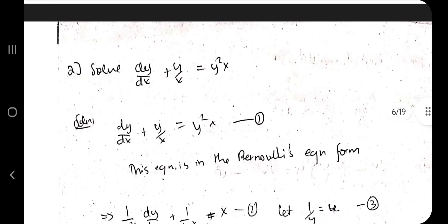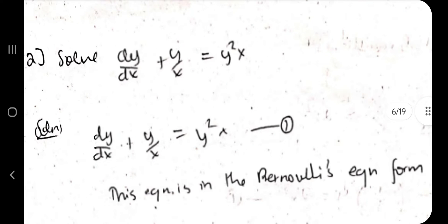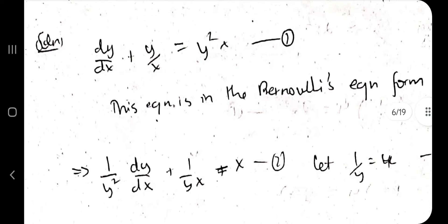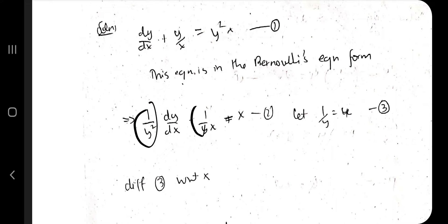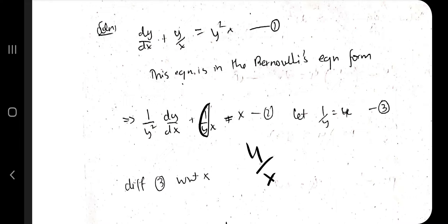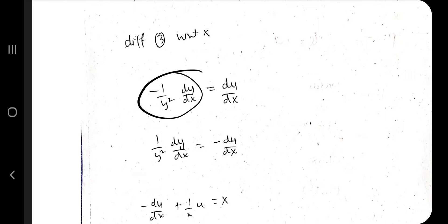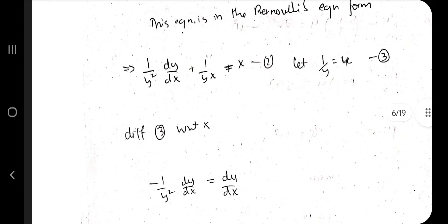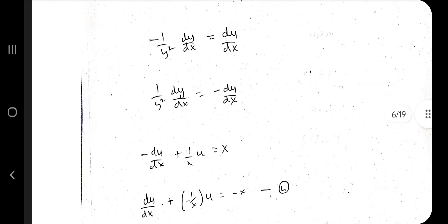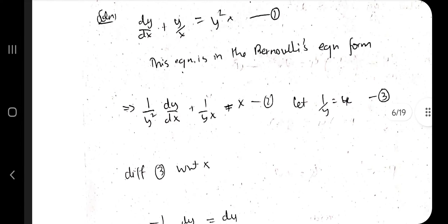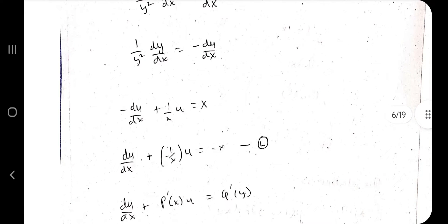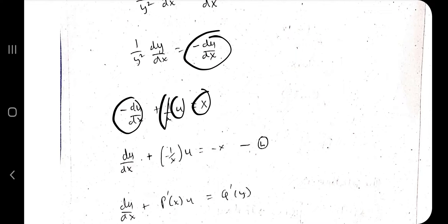In Bernoulli's form there is a y² term present. To remove it, divide the whole equation by y². This gives 1/y² on one term, 1/y on another, and only x on the last. Now substitute u = 1/y. Differentiating gives −(1/y²)·dy/dx = du/dx. Substitute this into the equation, so you get −du/dx + (1/x)·u = x. This is now in linear form.